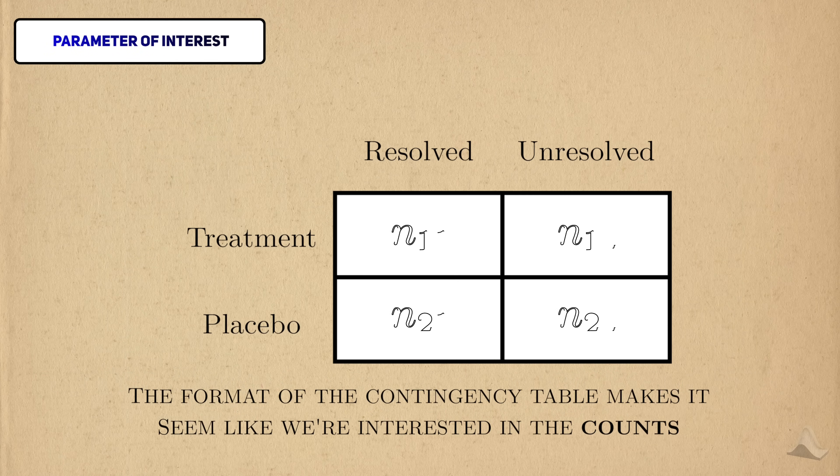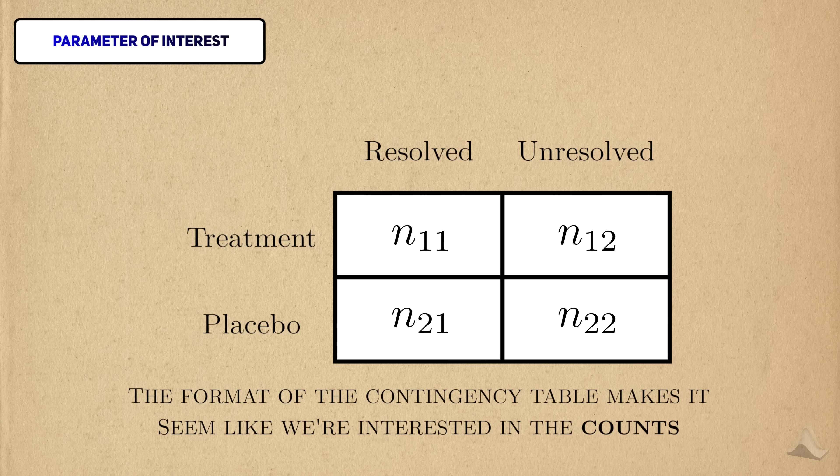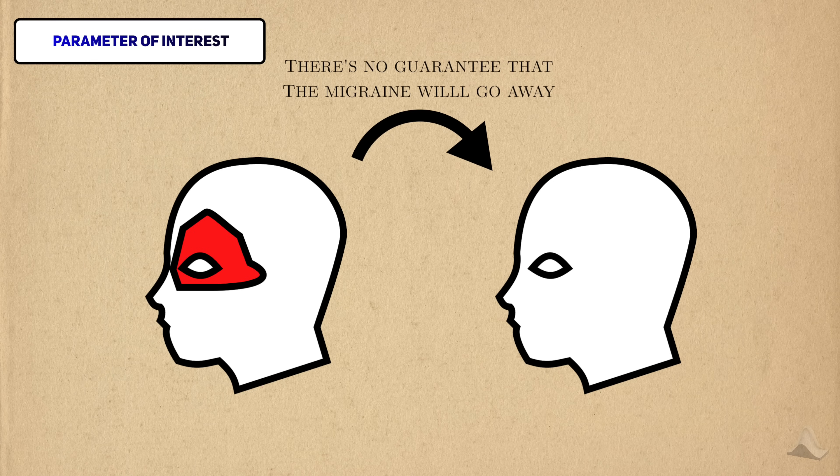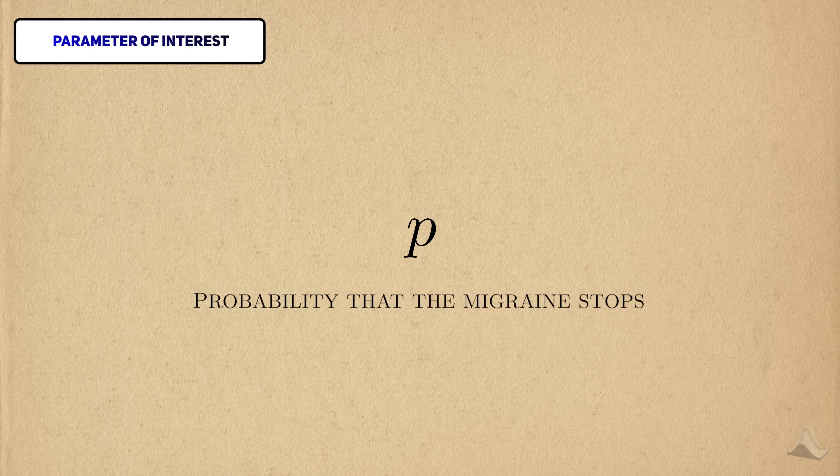The format of the contingency table makes it seem like we're interested in the counts within the table. That's actually not the case. For various reasons, it's not guaranteed that the migraine will go away, so we think of this event as being random and having some probability that it'll happen. This probability is our parameter of interest.